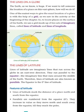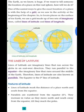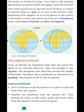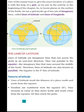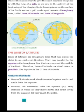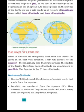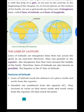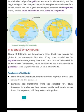उस grid की मदद से हम यह जान पाते हैं कि कोई particular place कहाँ पर located है। Lines of latitude are imaginary lines that run across the globe in an east and west direction. ये काल्पनिक रेखाएँ होती हैं जो पूर्व से पश्चिम की ओर खिंची होती हैं। They are parallel to the equator.